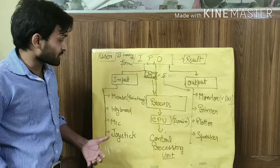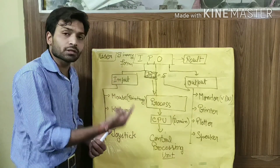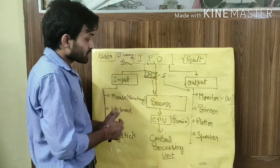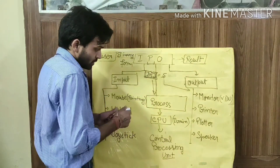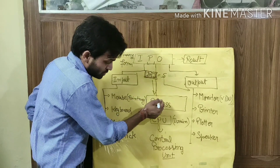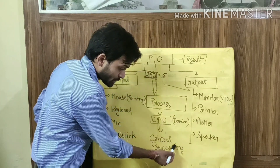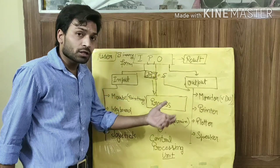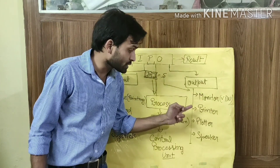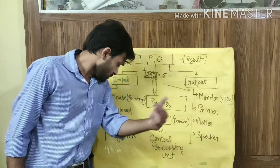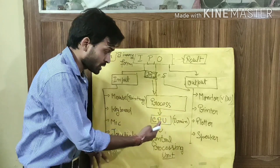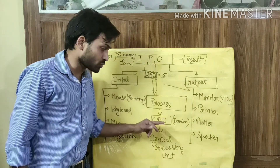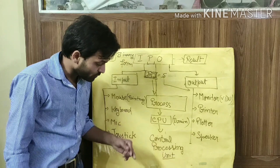Now let us repeat once again. First the user provides an instruction, then that instruction is converted into binary form or system-readable form. Then the system processes it according to the set of instructions — this is called the process — and this process is done by the CPU, also known as the brain of the computer, or central processing unit. Then it produces the result, and the result is shown by output devices like monitor, printer, plotter, speaker, and so on.